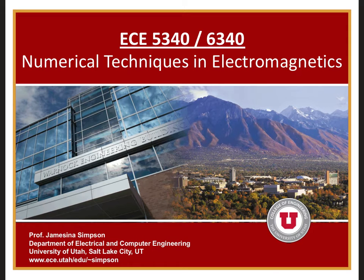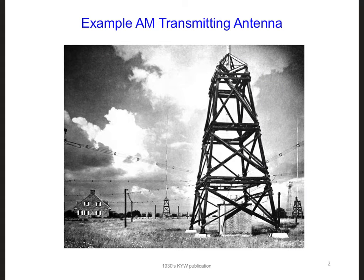Now that we have a working two-dimensional FDTD code, let's start adapting it to the design challenge. We talked about the range of FM and AM radio stations and how we may need to go to a lower operating frequency in order to increase the range of our geolocation system.